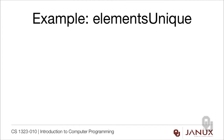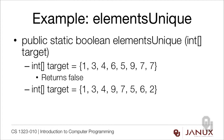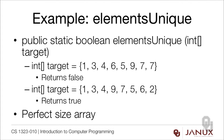The second example is elements unique. The signature is: public static boolean elementsUnique with one array. If the target array contained 1, 3, 4, 6, 5, 9, 7, 7, it would return false because there are two sevens — one element was repeated. If target contained 1, 3, 4, 9, 7, 5, 6, 2, the method would return true because none of the elements are repeated. This is also a perfect size array, as you can tell from the signature since no separate size parameter was provided.